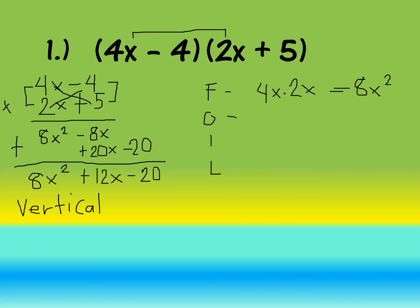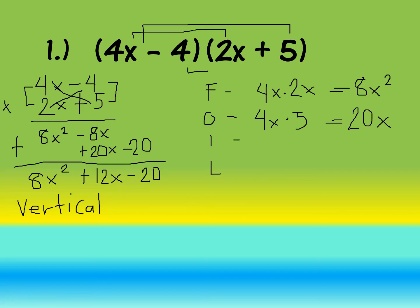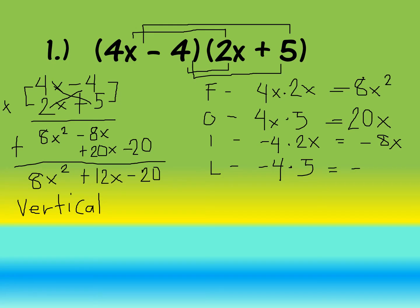Next is the outer term: 4x times 5 gives us 20x. Then the inner term: negative 4 times 2x — negative 4 times 2 gives us negative 8, copy variable x, giving us negative 8x. Finally, the last term: negative 4 times positive 5 gives us negative 20.